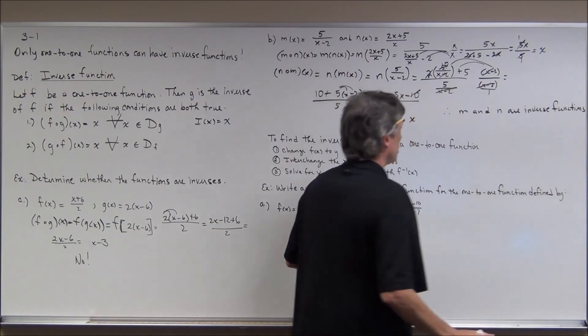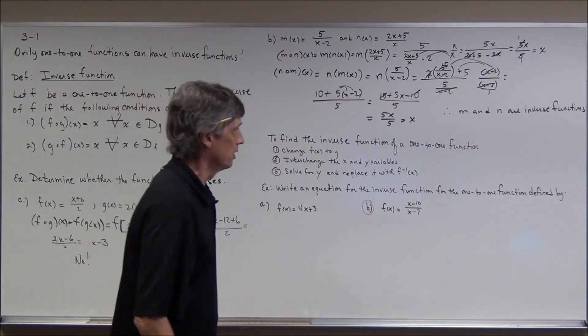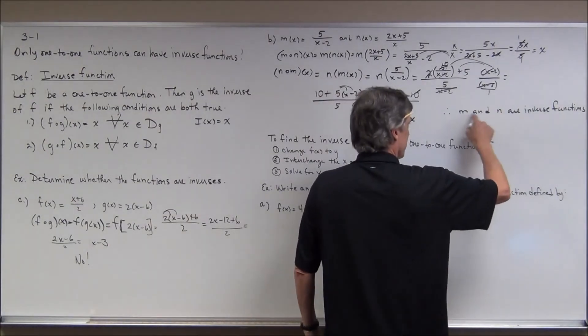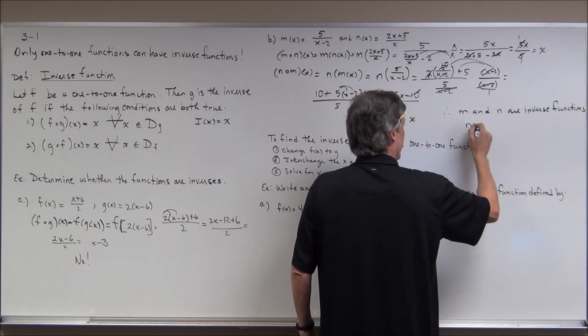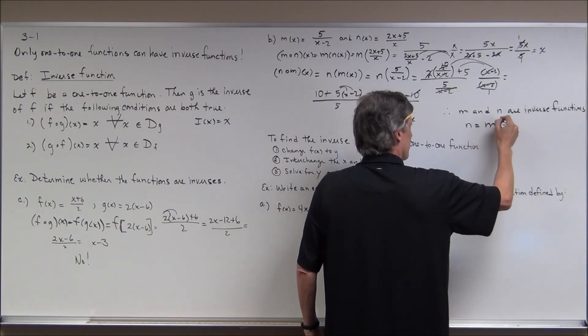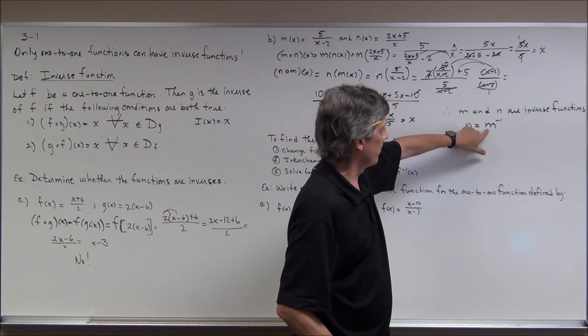Now, what they like to do to show inverse functions is they like to use a special type of notation. Like if I said N is the inverse of M, one way that I can write that is I can write N as M with what looks like a negative 1 exponent. But this is inverse function of M, when you see that.